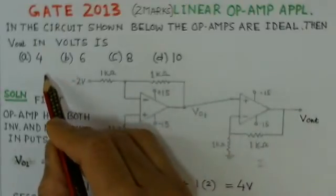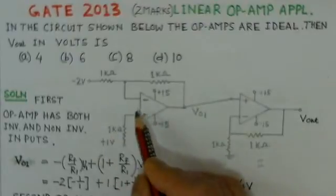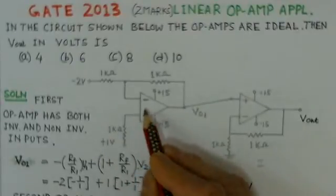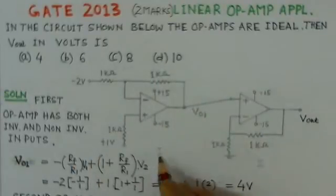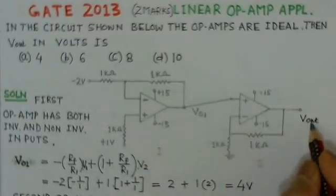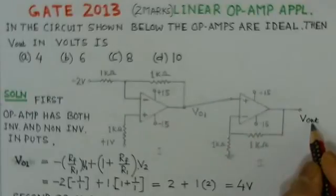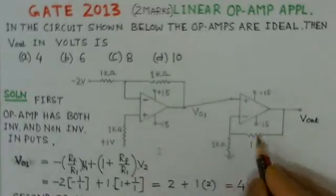we have to find out of these four options which is the right option. The circuit given is of two operational amplifiers. We call it operational amplifier 1 and this is operational amplifier 2, and we have to find the Vout here. What is given is that the op-amps are ideal, both operational amplifiers are ideal.